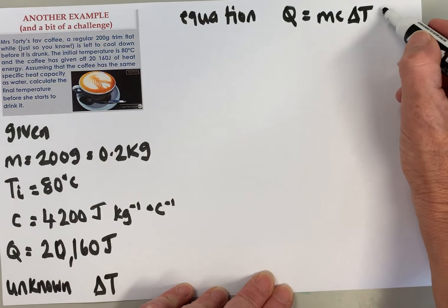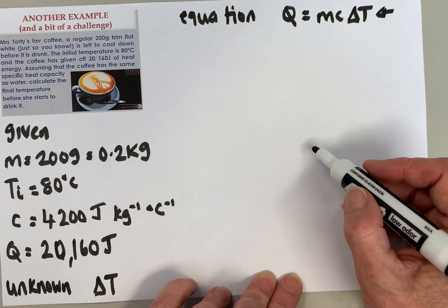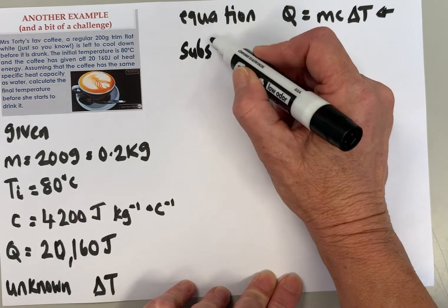Remember, we're looking to find delta T. So next part of our GUESS strategy is to Substitute.